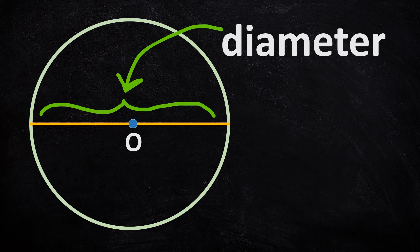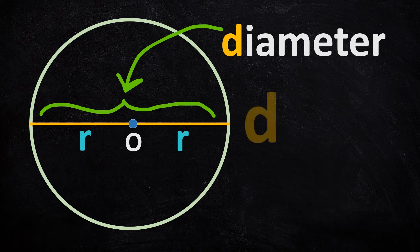The diameter is always twice the radius so that's what you need to know about the diameter. It's 2 times the radius.